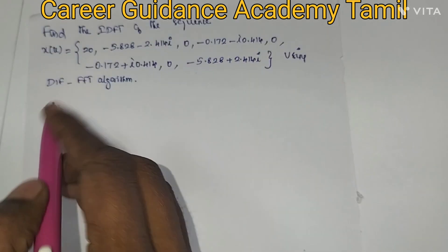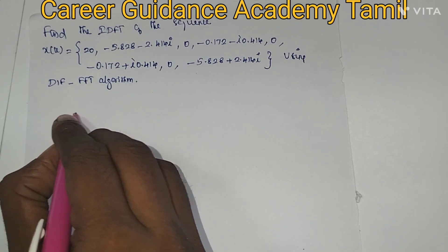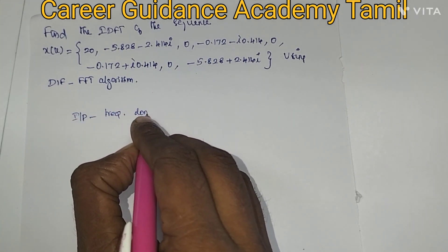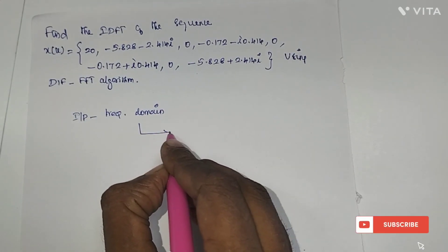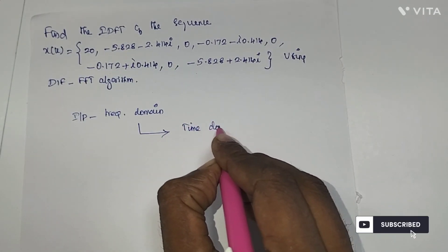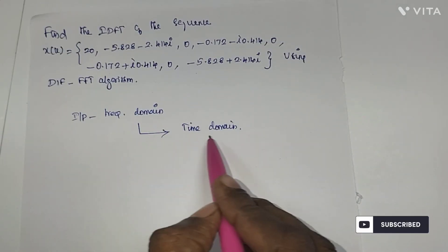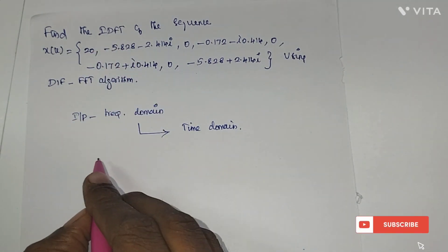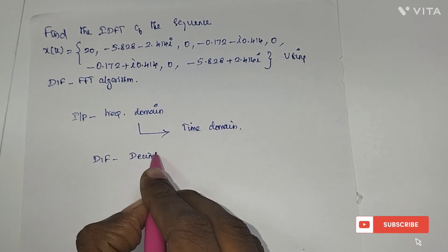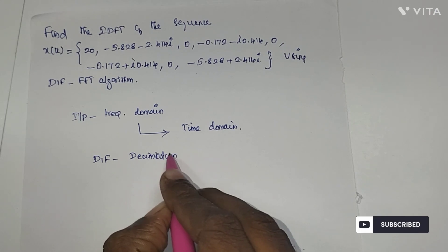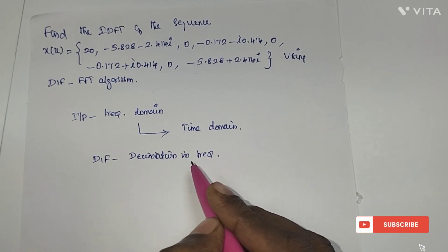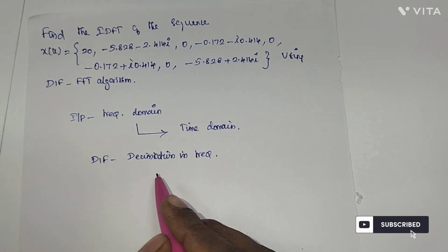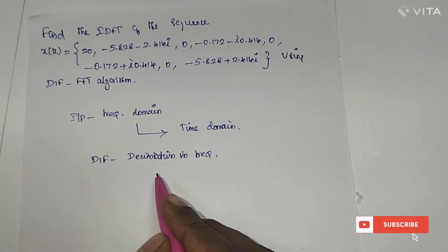The input sequence is in the frequency domain. We have to convert frequency domain into time domain using the DIF FFT algorithm. DIF stands for decimation in frequency, and FFT is the fast Fourier transform. We use FFT to reduce computational time — the number of multiplications and additions is reduced significantly by using the DIF FFT algorithm.